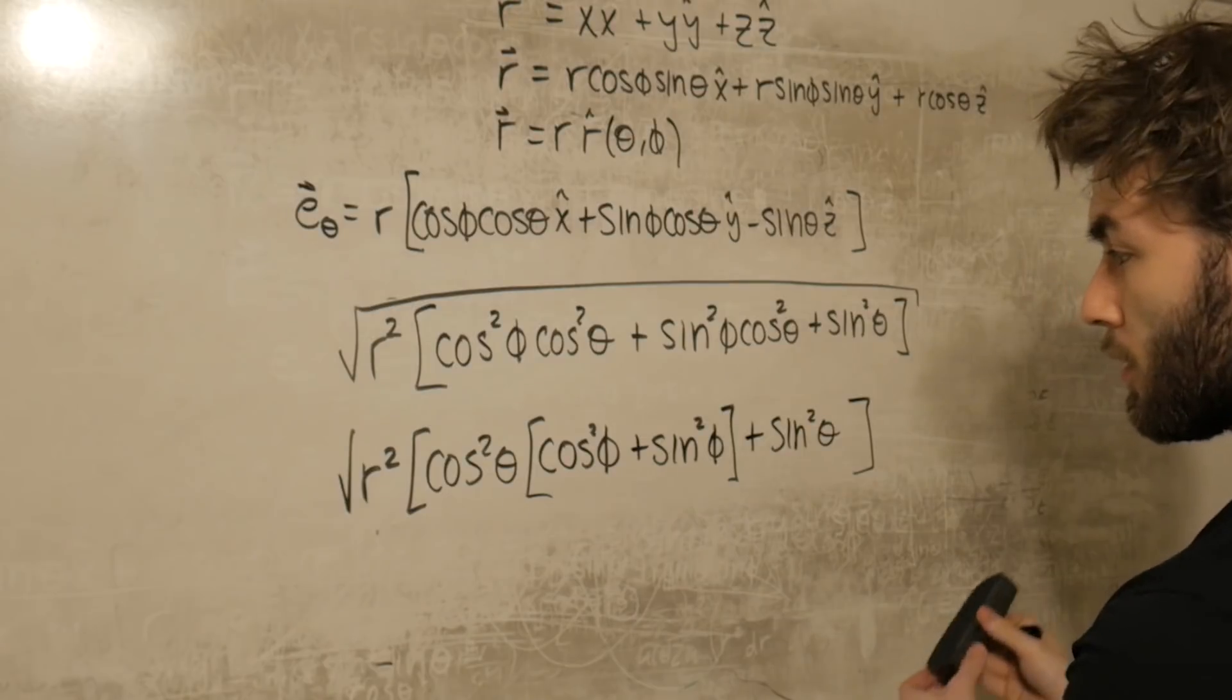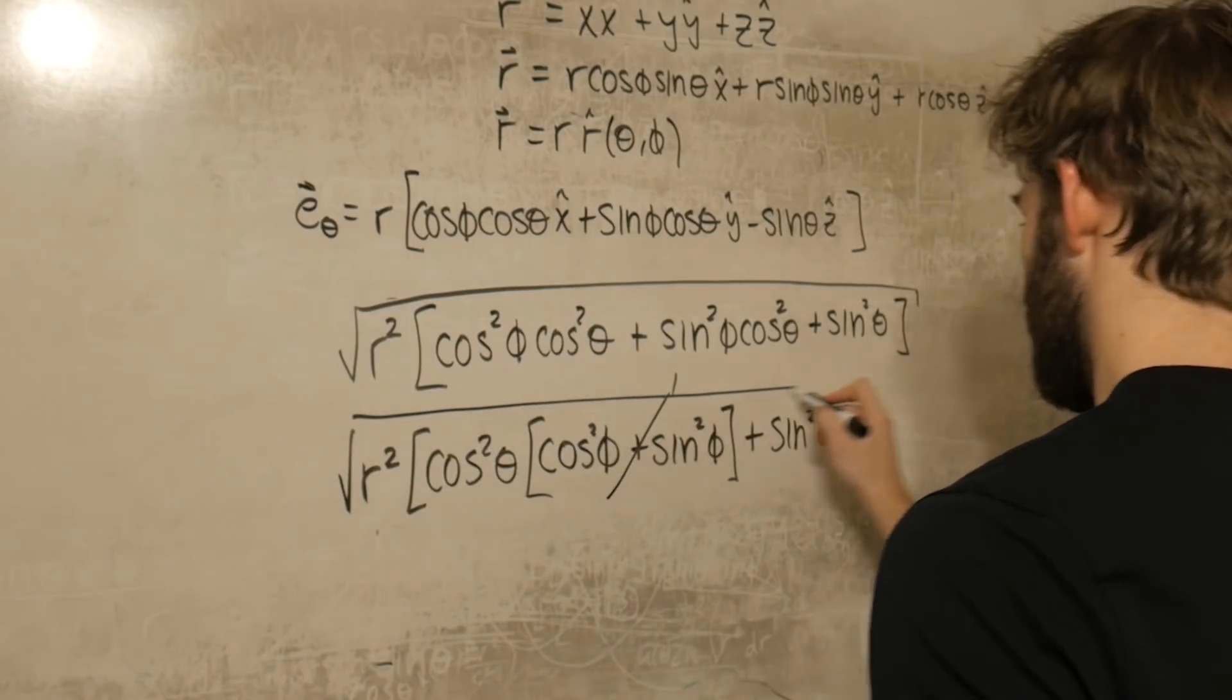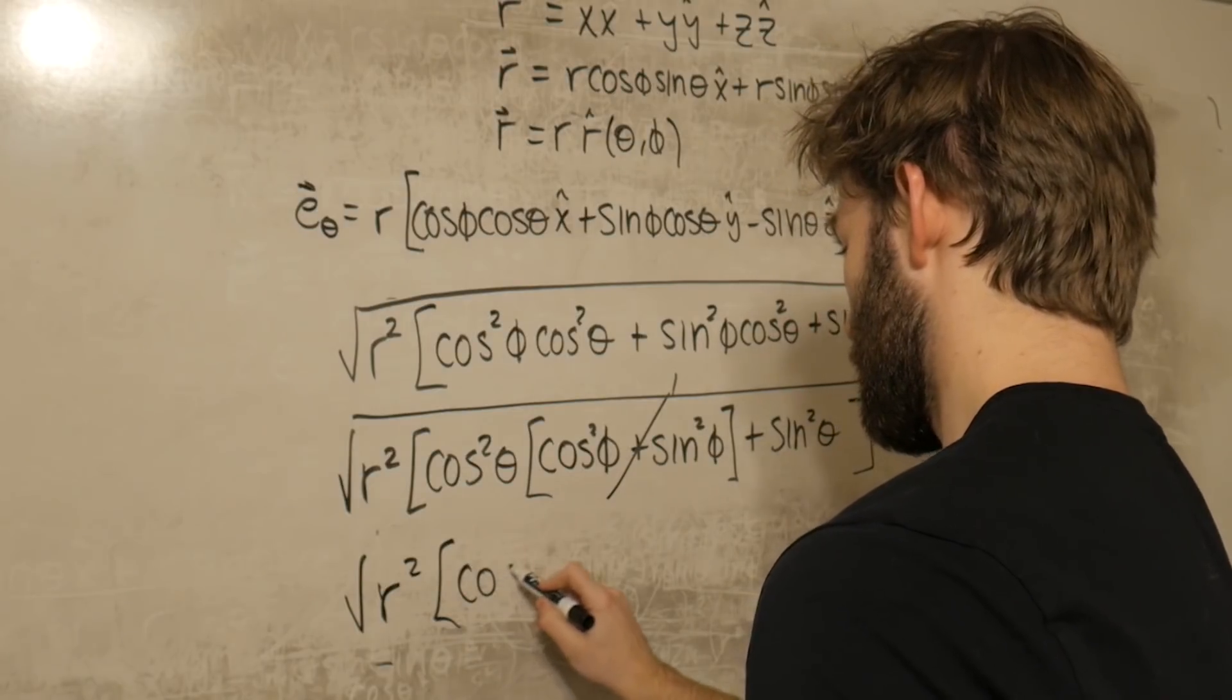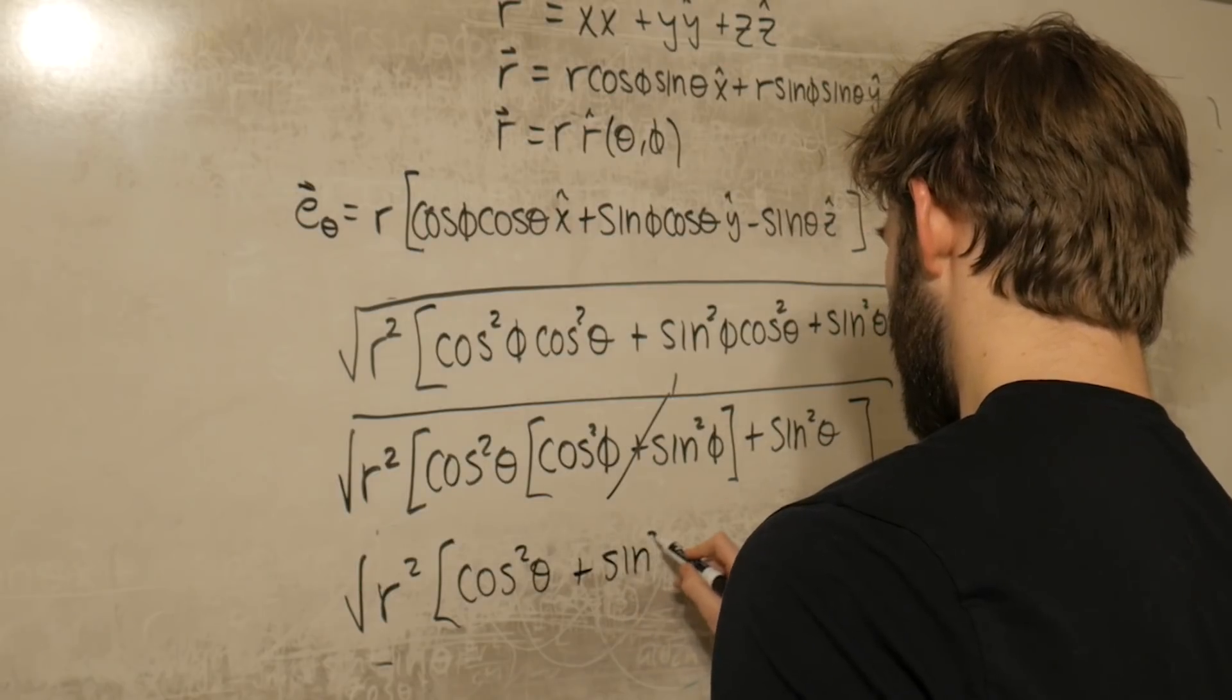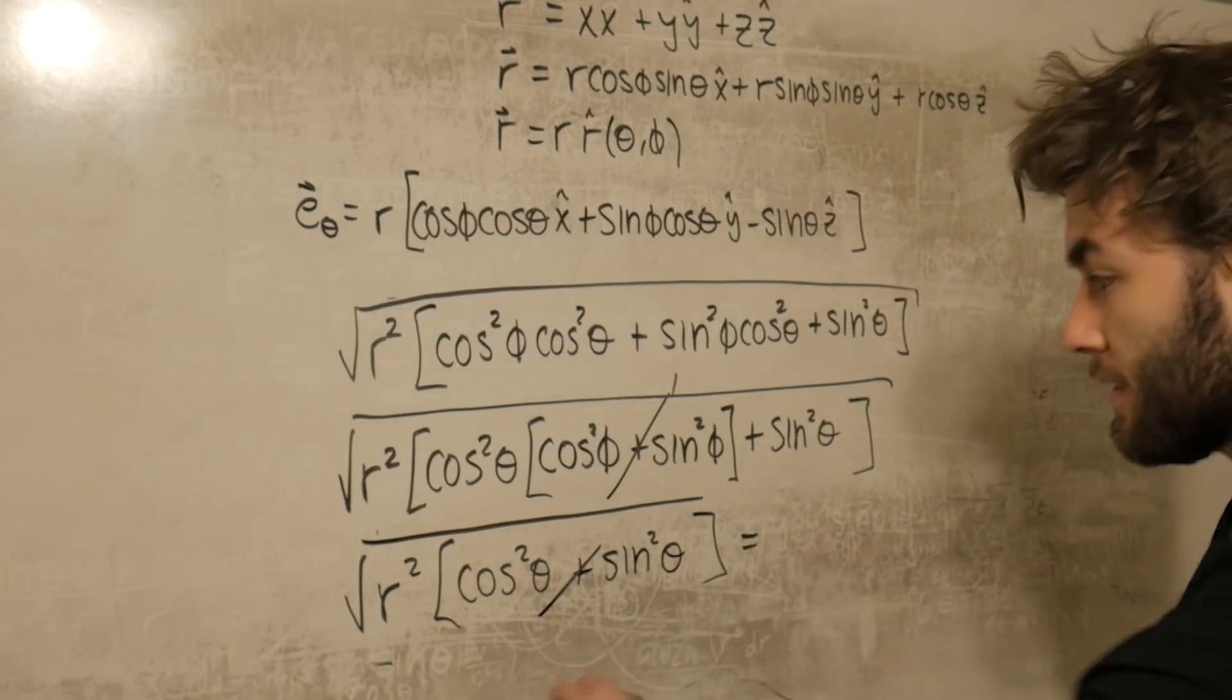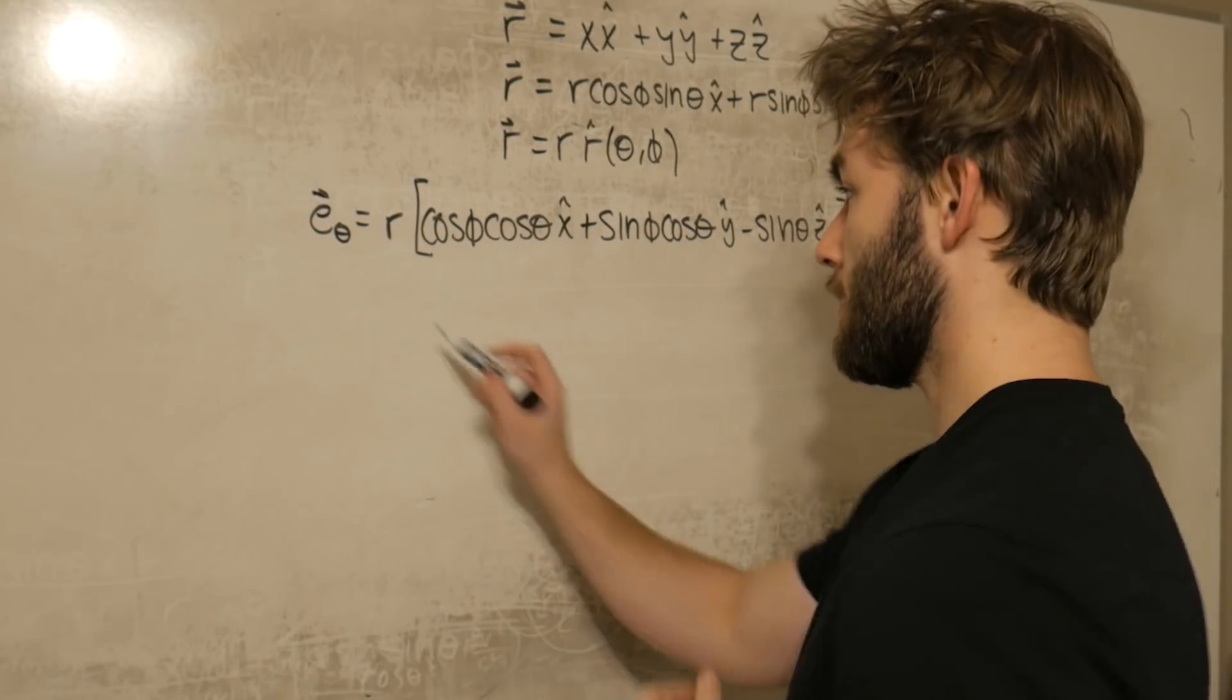Cosine squared plus sine squared is just one, and we get that this is all square rooted. This is equal to the square root of r squared times cosine squared theta plus sine squared theta, which again is just one. And this leads us to the only thing that survives is the square root of r squared, which is just r.